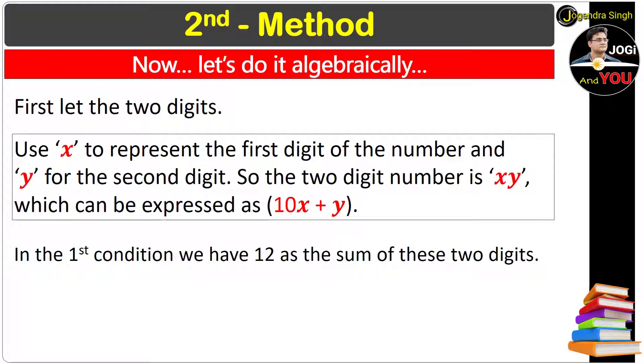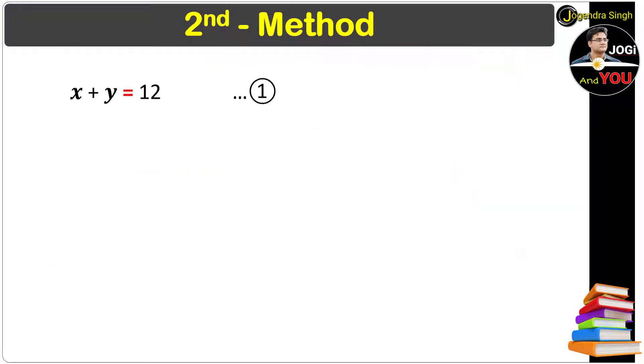In the first condition we have 12 as the sum of these two digits. That means sum of these two digits is 12. Put this up here.